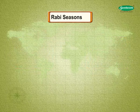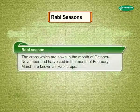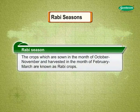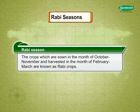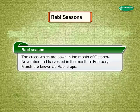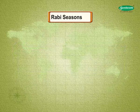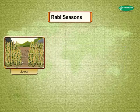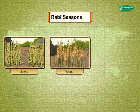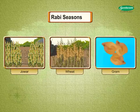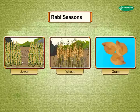Rabi season: The crops which are sown in the month of October and November and harvested in the month of February and March are known as Rabi crops. For example, Jawar, Wheat, Gram, etc.